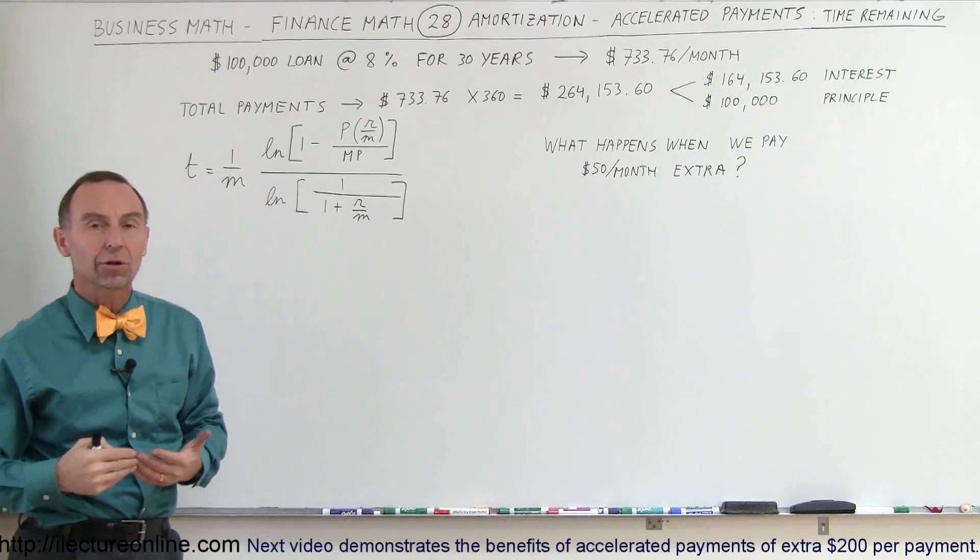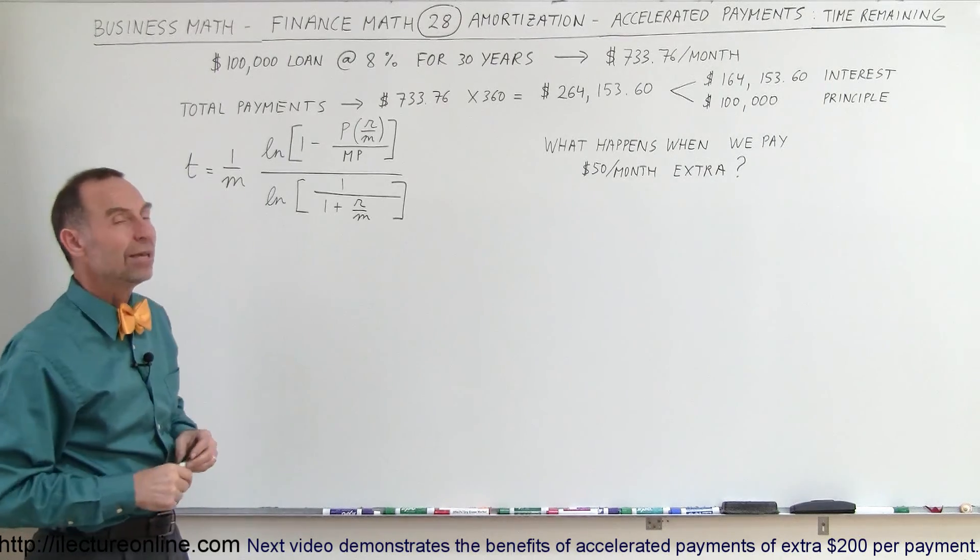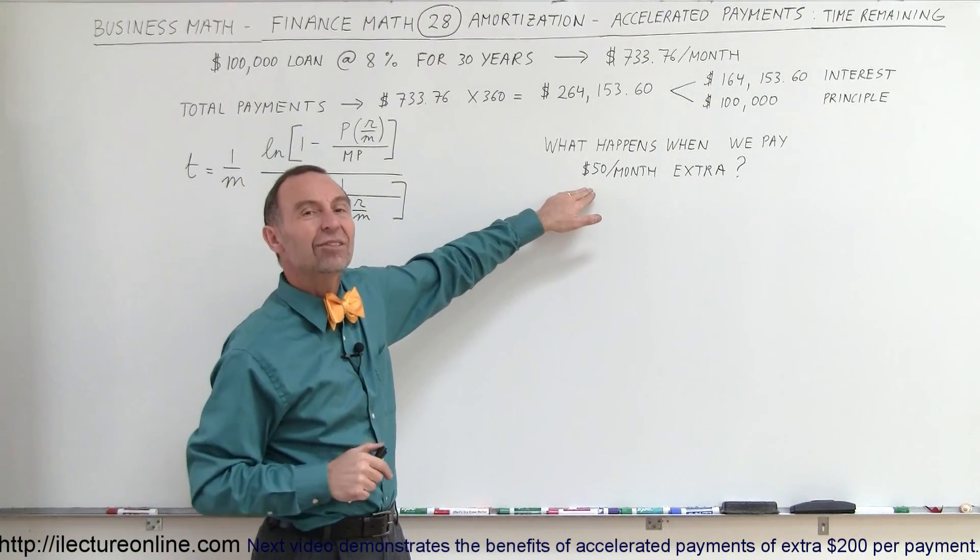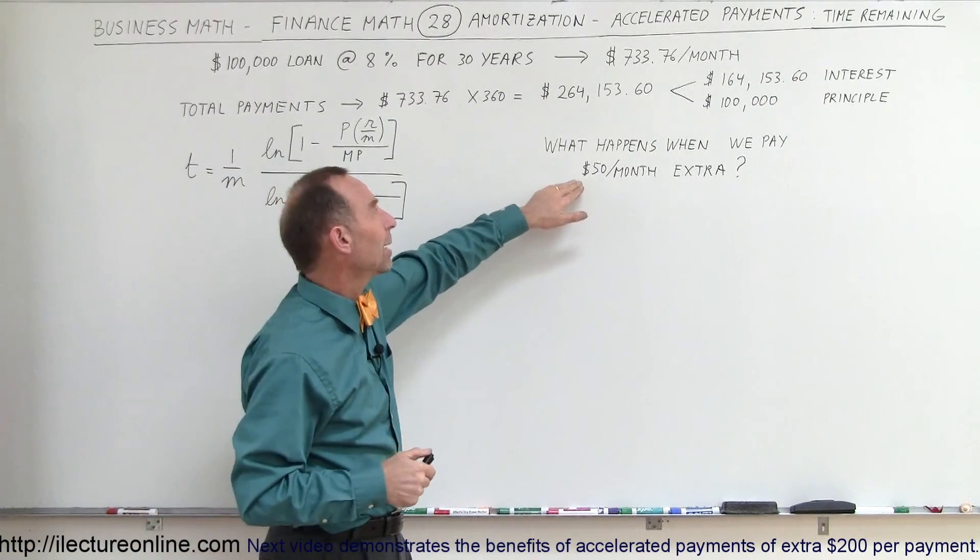You say, okay, I will take the 30-year loan because that's all they're willing to give me. But without telling them, you're going to go ahead and give them an extra $50 each time the payment is due.